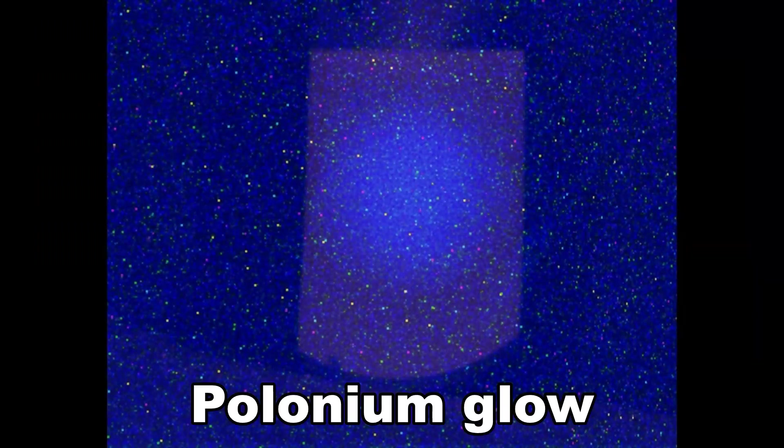The beta radiation cannot escape the container and their energy is converted to light by a phosphor. This is the same radioluminescence effect used in alpha scintillation.